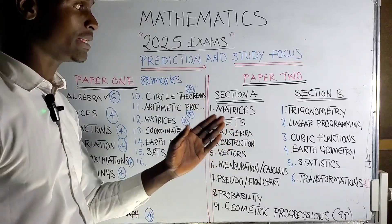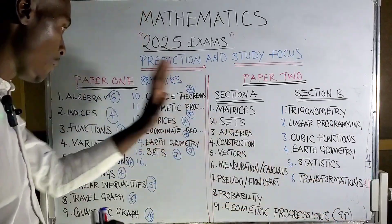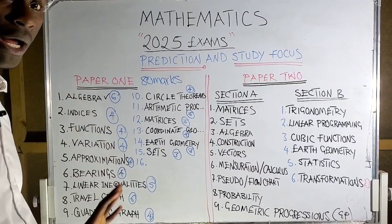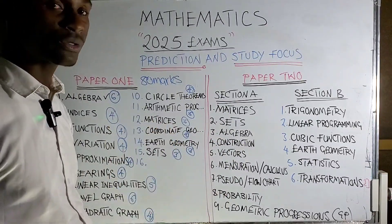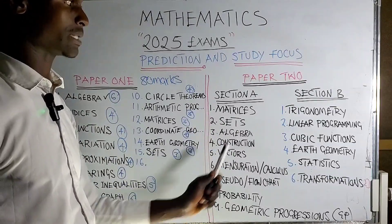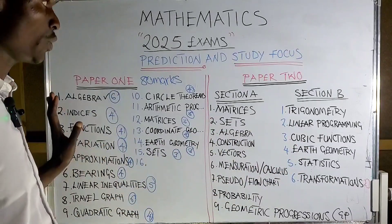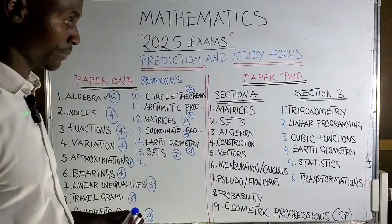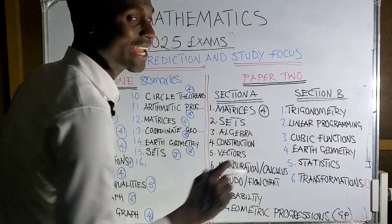Paper two is divided into two sections: section A and section B. For paper one there are no sections — you need to answer all the questions without a calculator. For paper two you are allowed to use a calculator. Section A is 52 marks, section B is 48 marks, totalling 100 marks. Both papers together give mathematics a total of 180 marks. Matrices is four marks in paper two, section A.